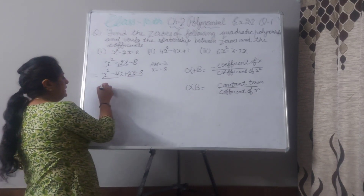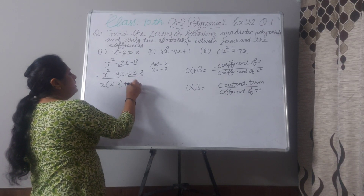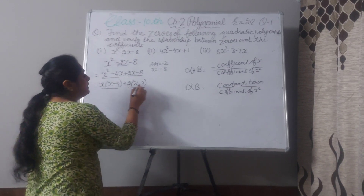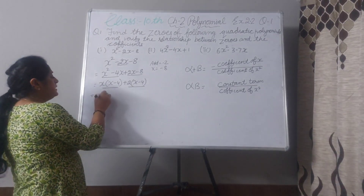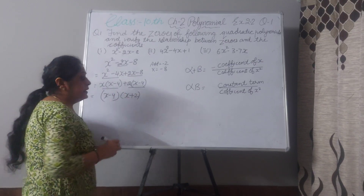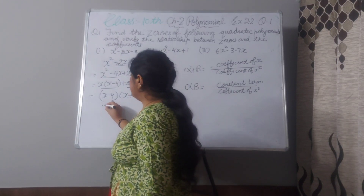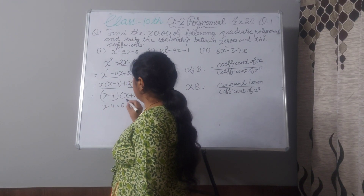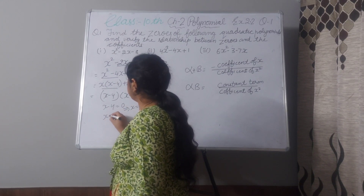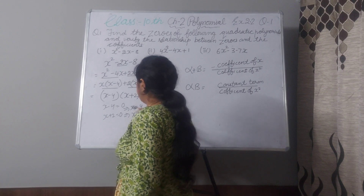Make two pairs. Take x as common — x minus 4. Take 2 as common — internally x minus 4 will be left. x minus 4 is common to both. Take x minus 4 outside and internally x plus 2 will be left. There are two zeros: either x minus 4 equals 0, which gives x equals 4, or x plus 2 equals 0, which gives x equals minus 2.